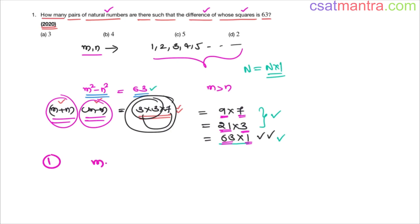So case 1, m plus n equals 9, m minus n equals 7. 2m, adding them, that is 16, m equals 8. n equals 1 from this. You substitute m equals 8 in any one of these, you would be getting n equals 1.